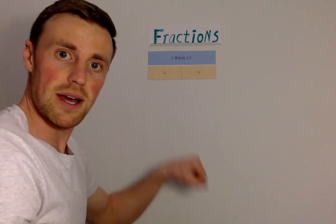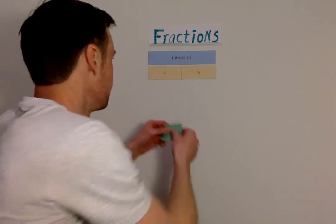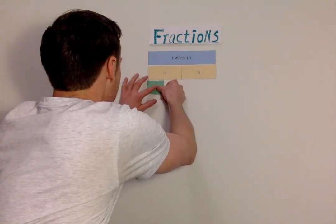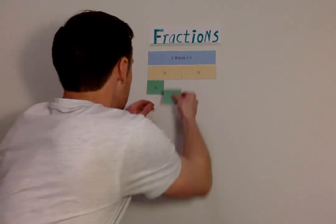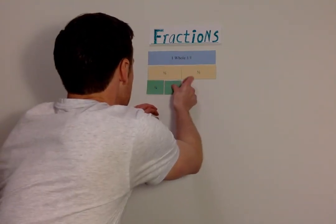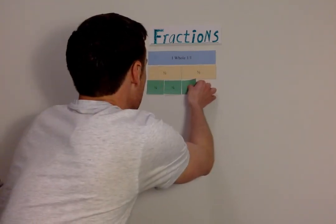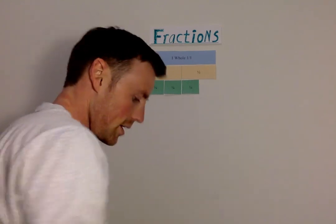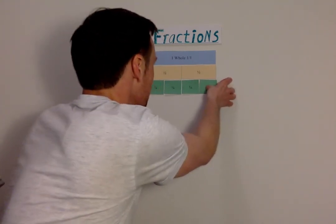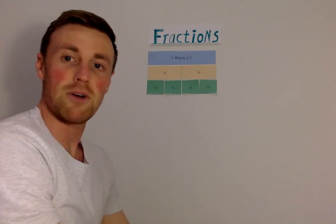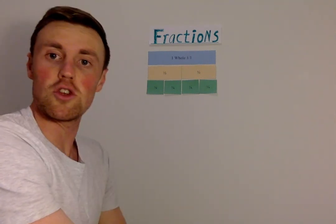Once I've done my halves, now I'll do my quarters. One. Two. Three. And four. There's my fraction wall. Now, let's see if you can do your fraction wall.